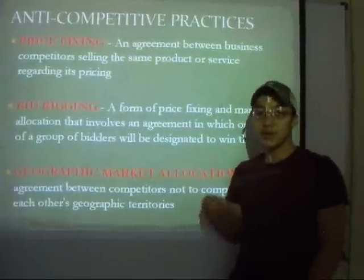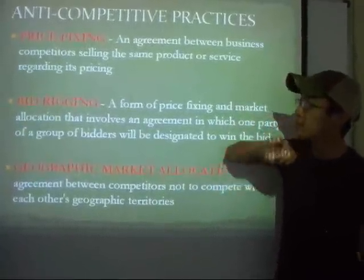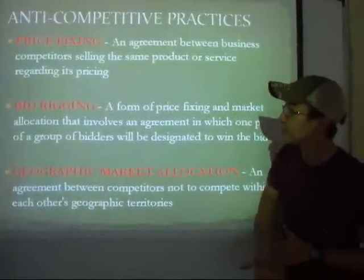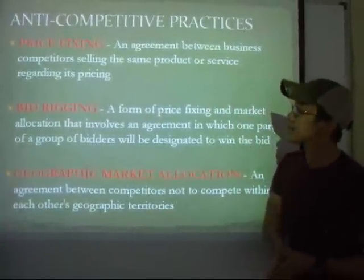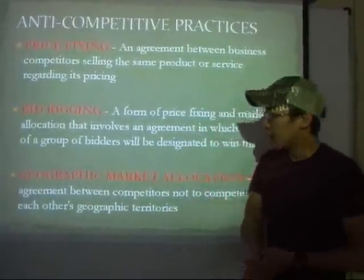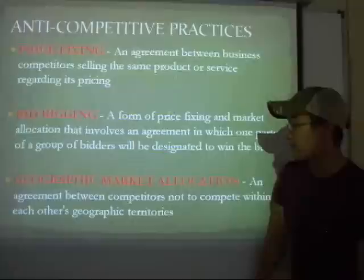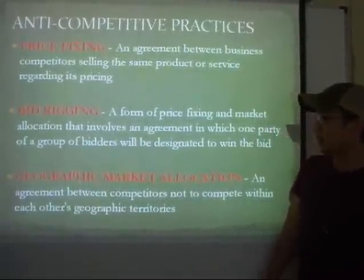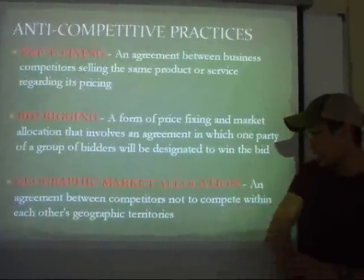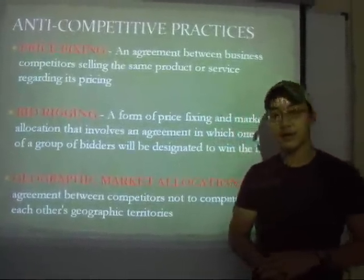There are a few examples of anti-competitive practices, which are price fixing, bid rigging, and geographic market allocation. Price fixing is an agreement between business competitors selling the same product or service regarding its pricing. Bid rigging is a form of price fixing and market allocation that involves an agreement in which one party of a group of bidders will be designated to win the bid. Geographic market allocation is an agreement between competitors not to compete within each other's geographic territories.